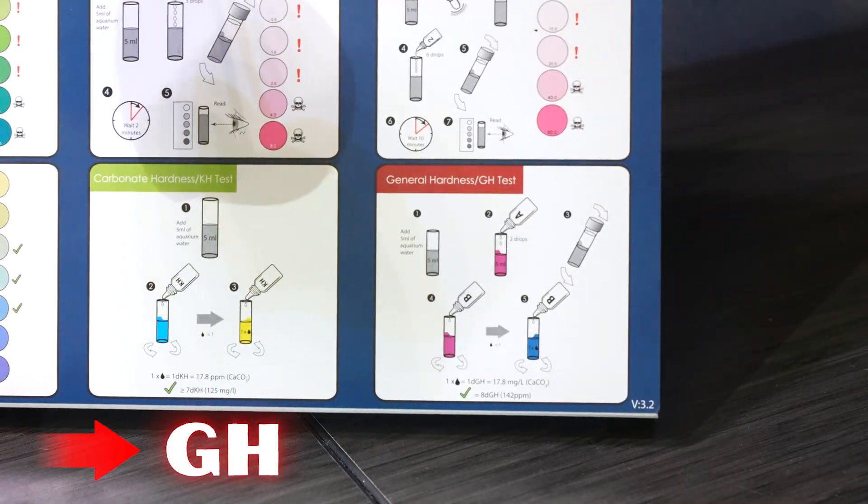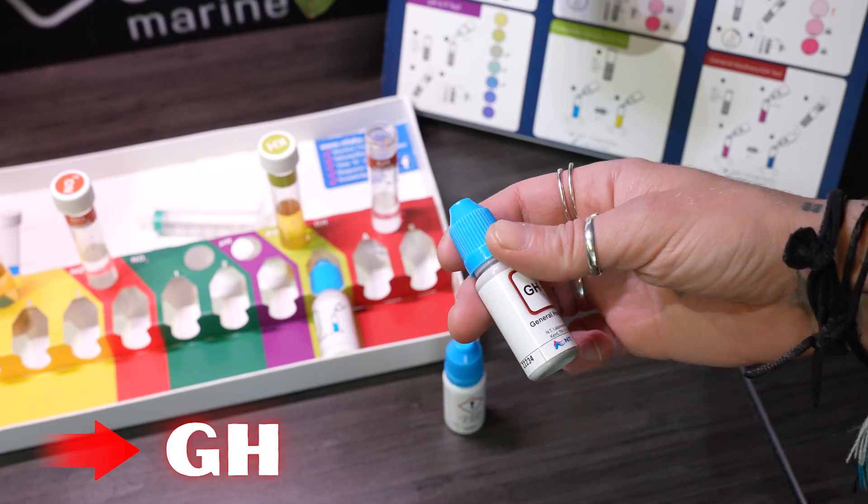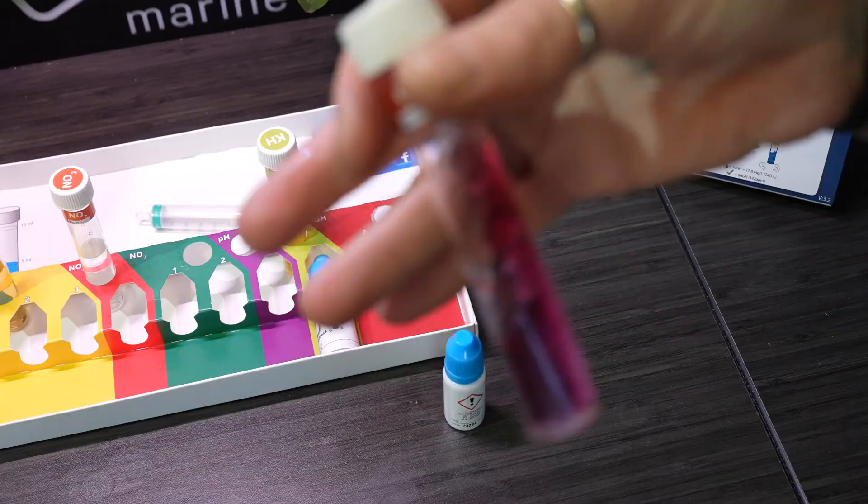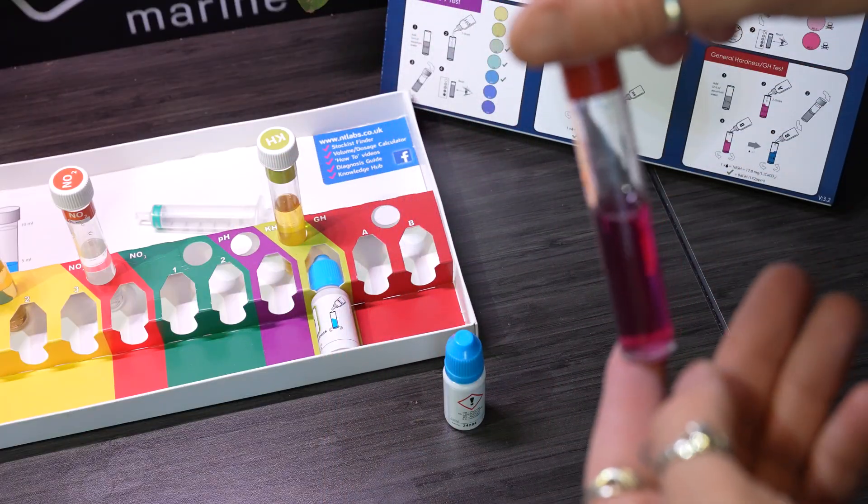Next up, GH, or general hardness. Water lies on a spectrum between soft water and hard water, depending on the amount of dissolved minerals. The more minerals, the greater the hardness.